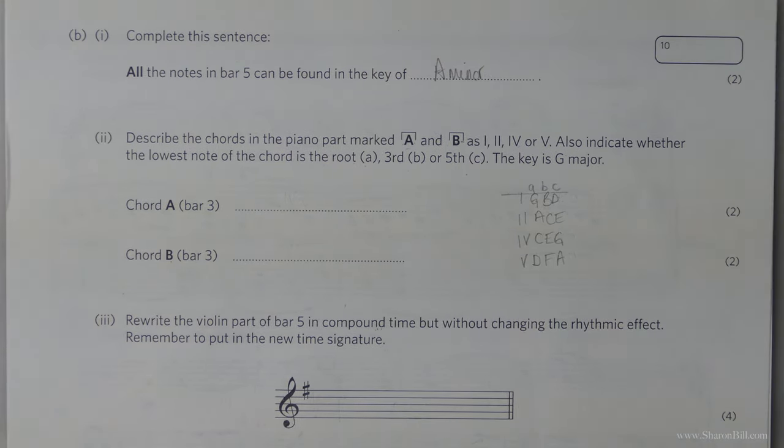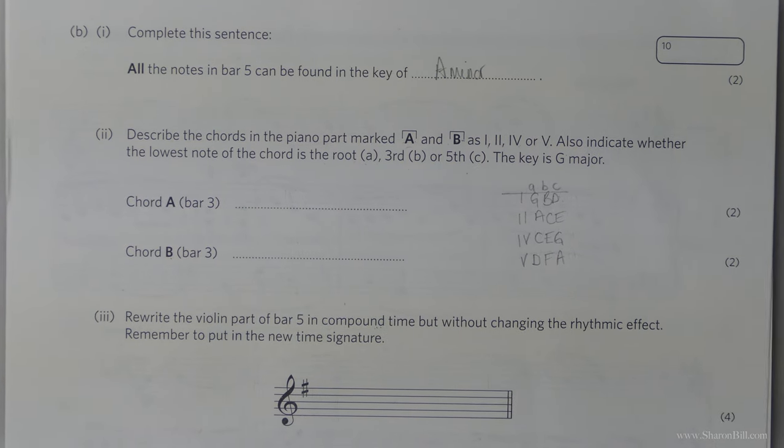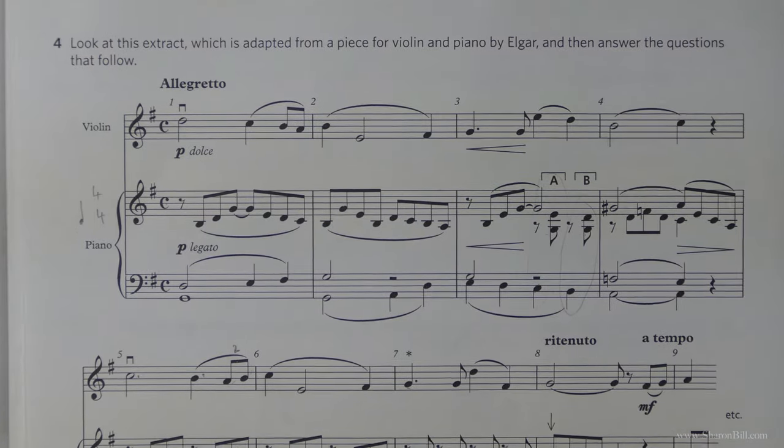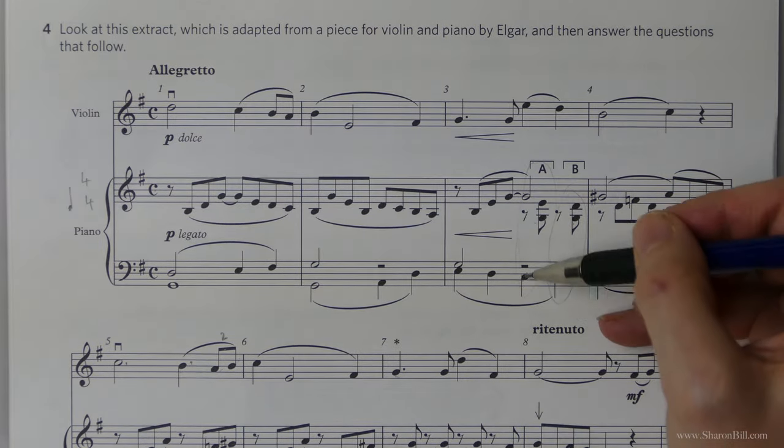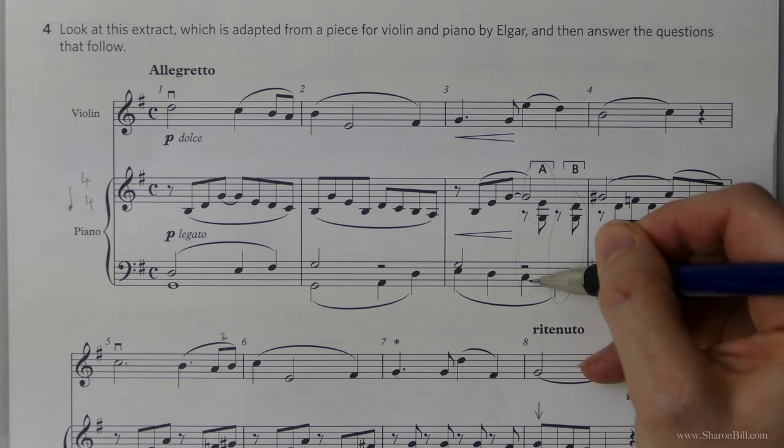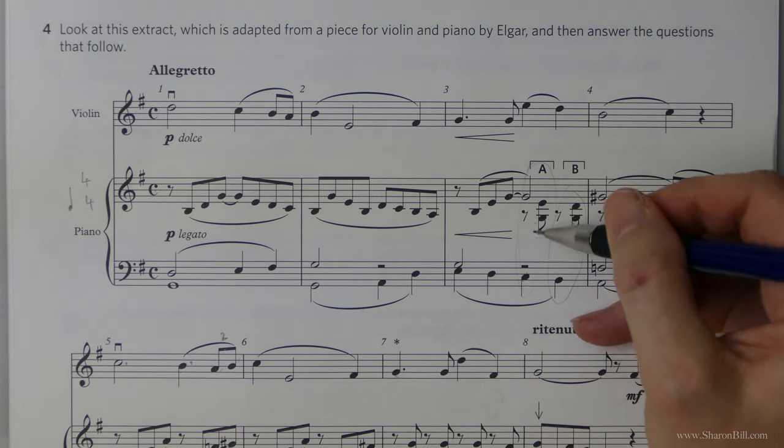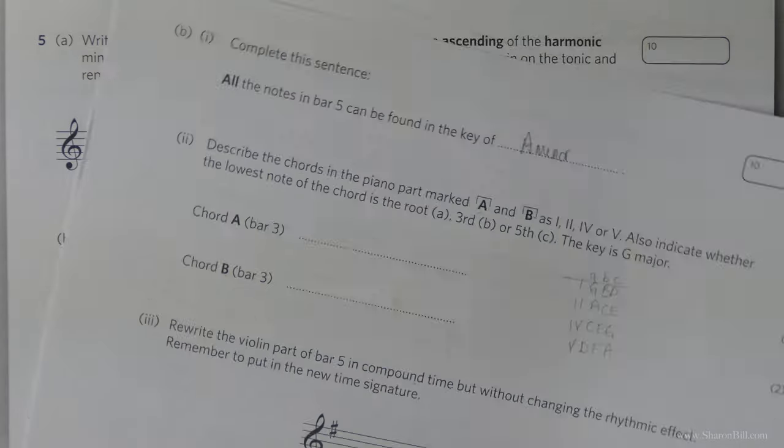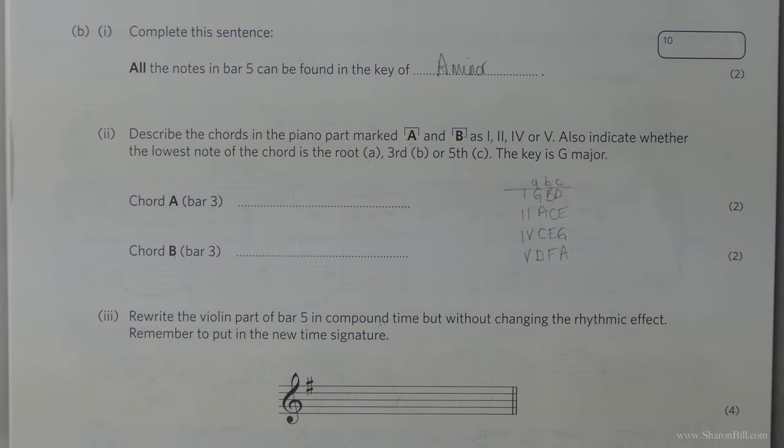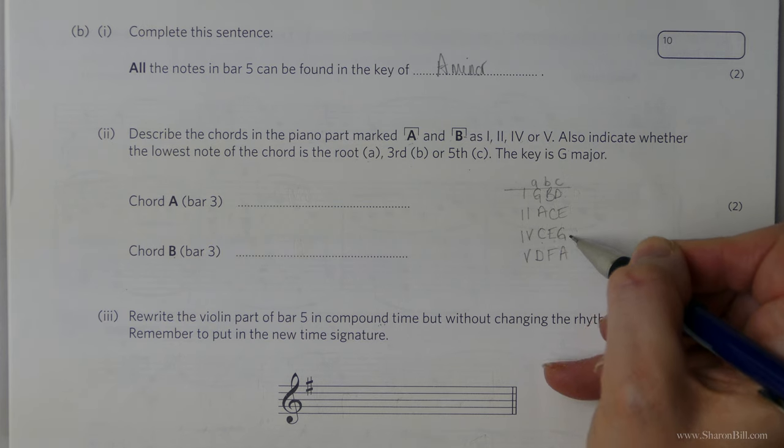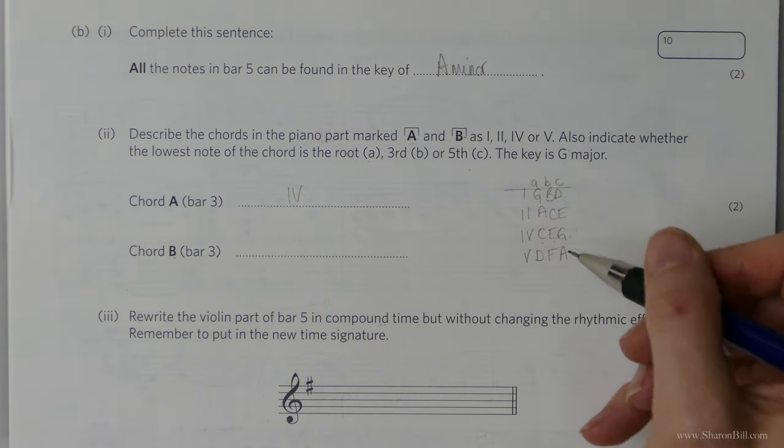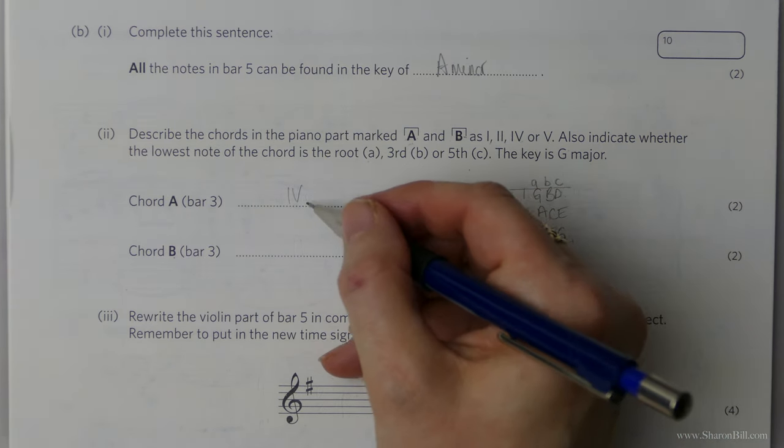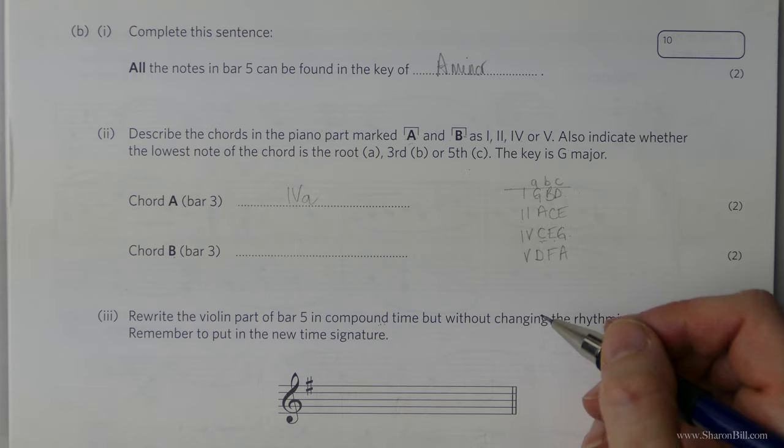So turning the page, we're looking at chord A. Here we see chord A. And so we have a C, a G, a G, and an E. C is in the base. So C E G is chord 4. And then the C is in the base. So it's position A.